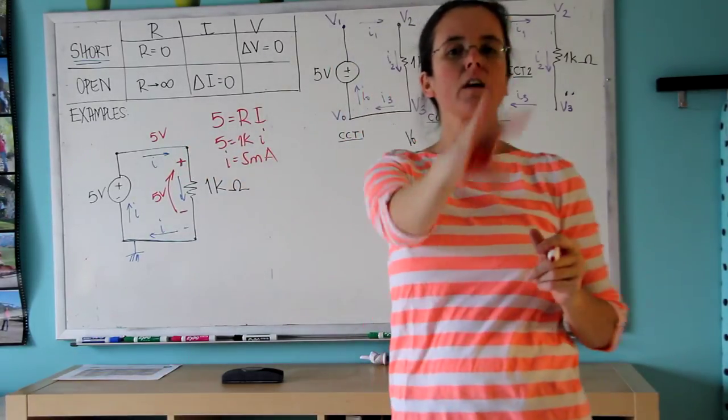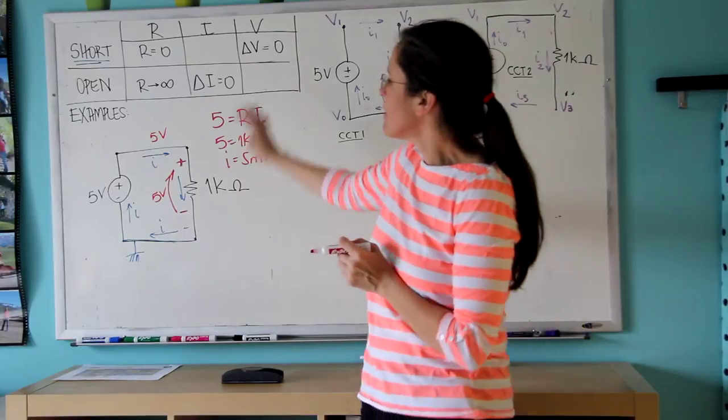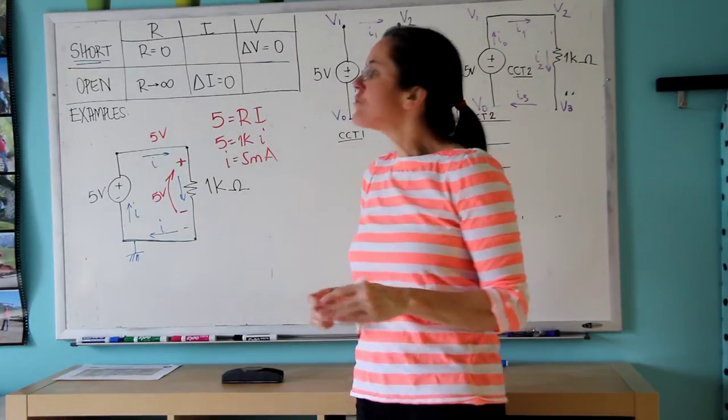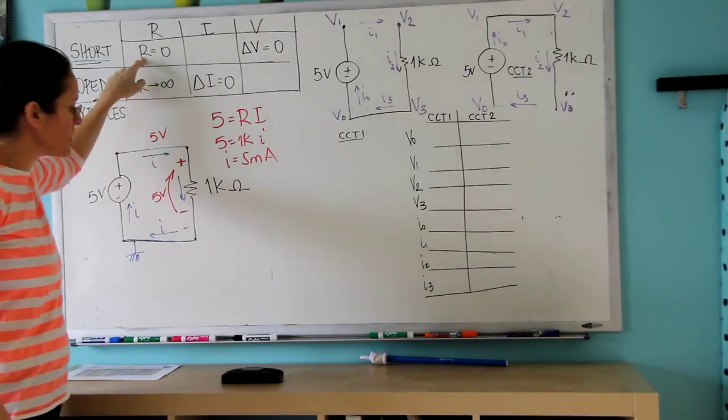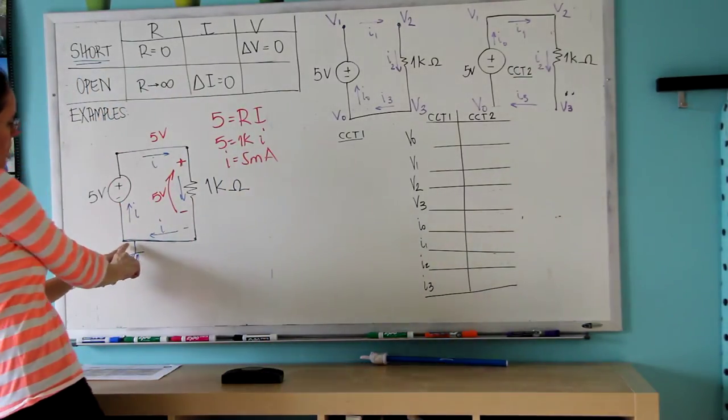This is all we knew before. What's new today is that if I have a short circuit, the resistance is zero. A short circuit means there is a wire from here to here—there is no resistance.